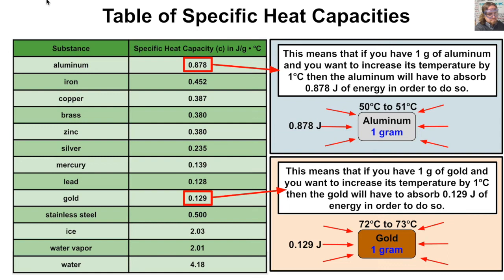This table shows specific heat capacities of different materials — you can find it online or in a textbook. For example, aluminum has a specific heat capacity of 0.878 joules per gram degree Celsius, meaning one gram of aluminum needs to absorb 0.878 joules to raise its temperature by one degree. Gold has a specific heat capacity of 0.129 joules per gram degree Celsius, so one gram of gold only needs 0.129 joules for a one-degree rise.